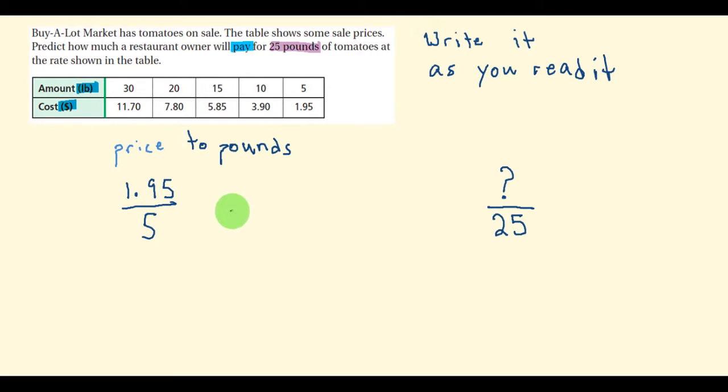The next step, all I have to do is ask myself, how do I get from 5 all the way over to 25? Well, we do that by multiplying by 5. 5 times 5 is 25.